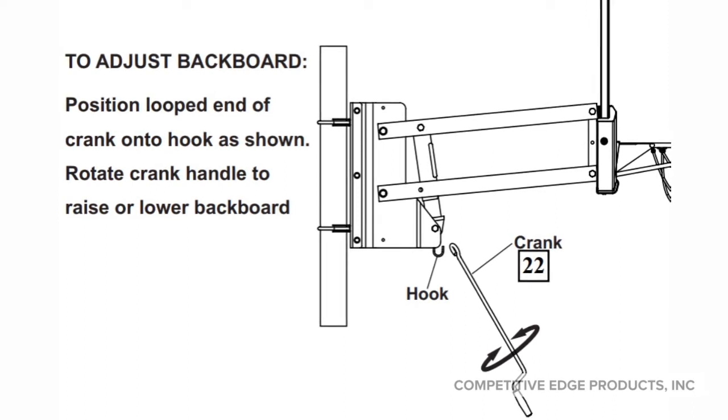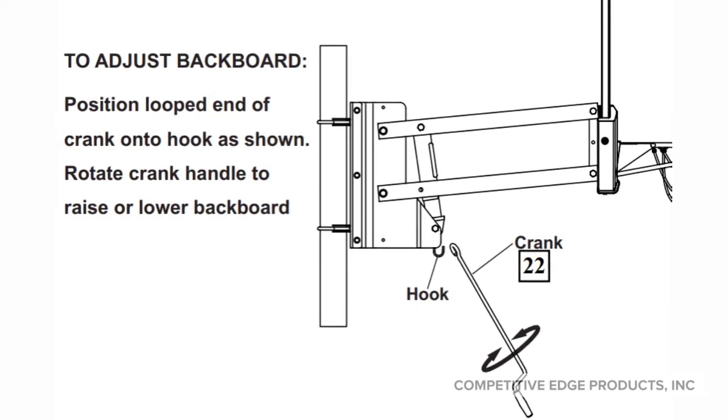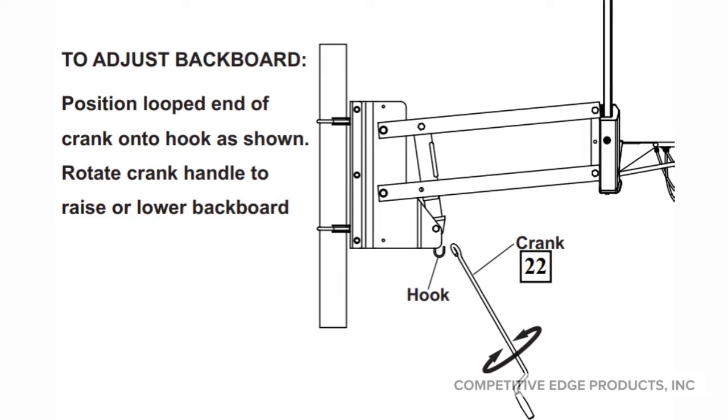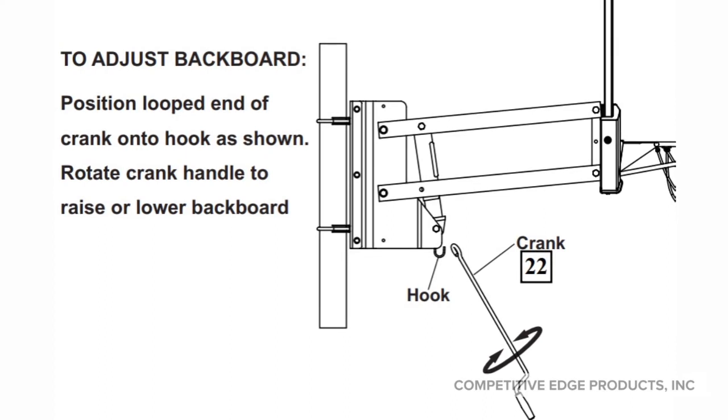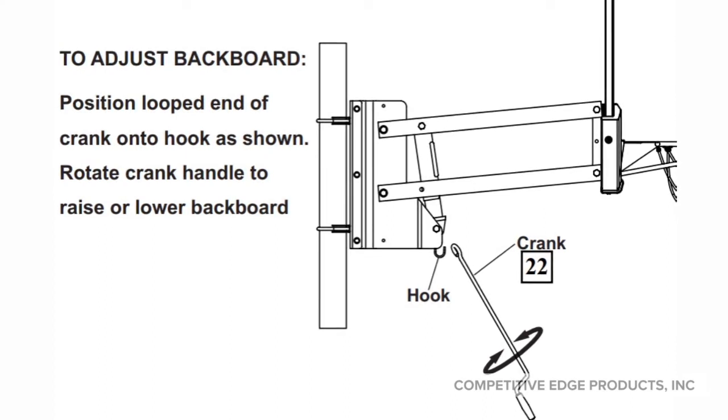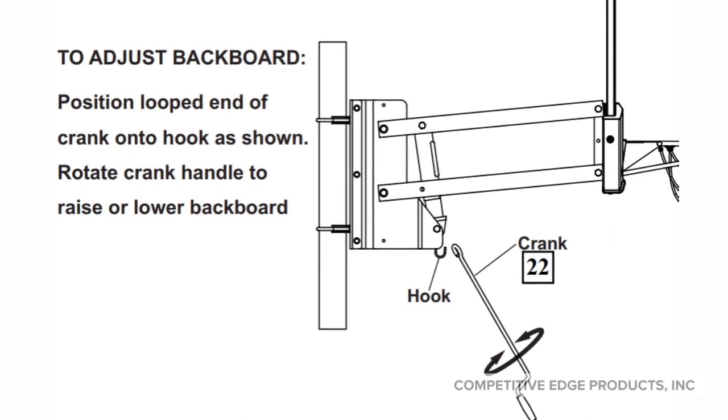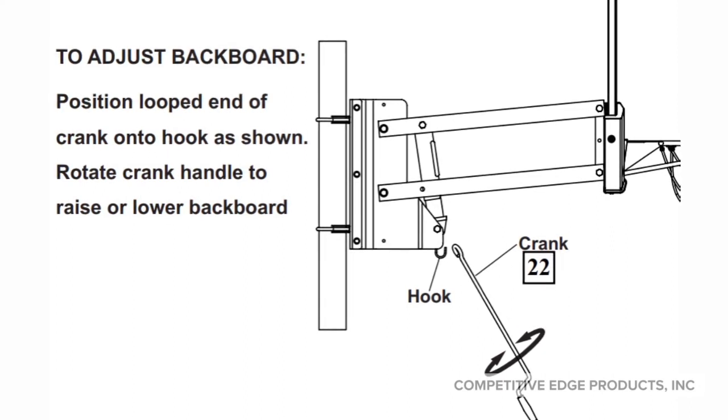The way to adjust it isn't by gravity using a broomstick and pushing it up and clicking the bracket and letting it pop back down. This uses a crank. It comes with a rod, you grab that from your garage, put it on the hook, spin it to the right to raise it, left to lower it, and you're good. Then you take the rod, pull it off, put it in your garage, and it looks fantastic.